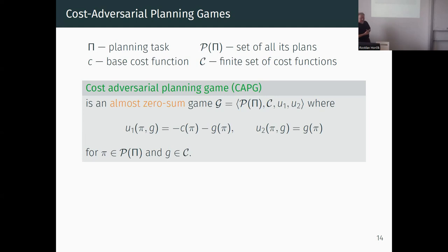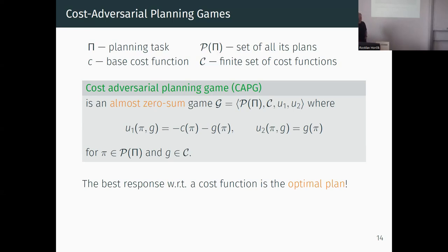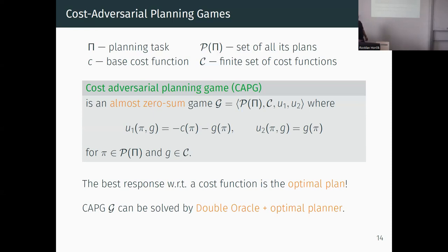In such a setting you can compute best responses using any standard optimal planner. It is possible to apply the Double Oracle algorithm together with an optimal planner to solve these kinds of games and compute the Nash equilibrium. That's the formal framework. These planning games are what we can model using our approach, and they relate to what people in game theory model as security games.